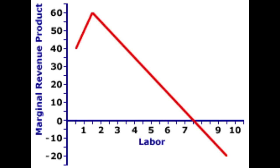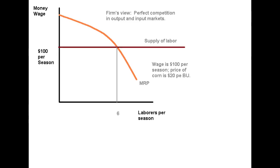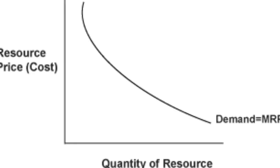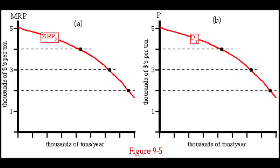The marginal revenue productivity theory of wages is a theory in neoclassical economics stating that wages are paid at a level equal to the marginal revenue product of labor, MRP — the value of the marginal product of labor, which is the increment to revenues caused by the increment to output produced by the last laborer employed.